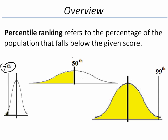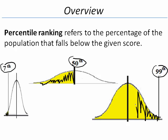In the middle, we see someone whose percentile ranking is 50th percentile. They scored above 50% of the population. And on the right is someone whose percentile ranking is the 99th percentile. They scored above 99% of the population.